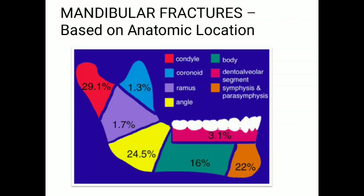In maxillofacial fractures, there can be fracture of either jaw — maxilla or mandible — associated with other bones like nasal fractures, zygomatic fractures, and frontal fractures. Sometimes there will be multiple fractures, that is pan-facial fractures. The classification of mandibular fractures based on anatomic location includes dentoalveolar segment, symphysis and parasymphysis region, body region, angle region, ramus region, coronoid fracture, and condylar fracture.